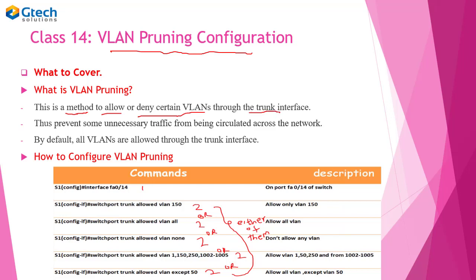We use the VLAN pruning method to allow or deny specific VLANs through the trunk interface. There are some VLANs that we only need to pass through the trunk interface, and some that we don't. This method will prevent unnecessary traffic from being circulated across the network.